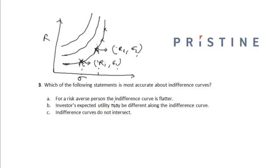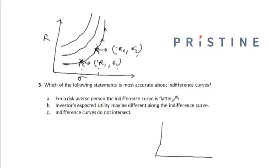For a risk-averse person, the indifference curve is flatter. Now this statement is incorrect because for a risk-averse person, more return should be given per unit of extra risk which he is taking. So in this case the indifference curve should be steeper.